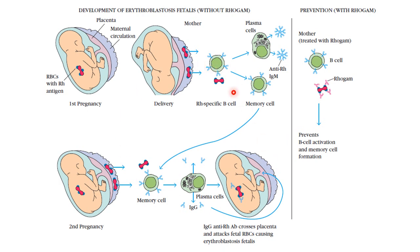This condition can be prevented with RhoGAM. RhoGAM consists of special antibodies produced against the Rh antigen. When the mother is treated with RhoGAM, these antibodies destroy whatever fetal RBCs are present in the maternal circulation. With no fetal RBCs remaining in the maternal circulation, B cell activation is prevented, memory cell formation does not occur, antibody formation is prevented, and erythroblastosis fetalis is avoided.